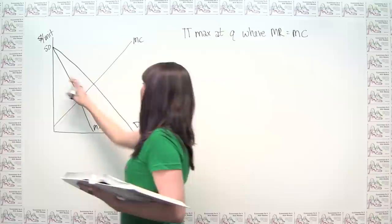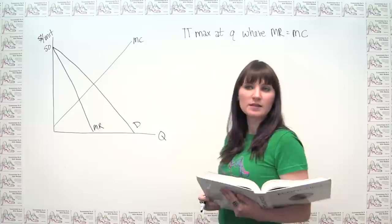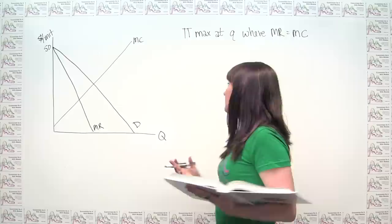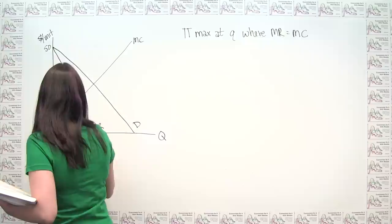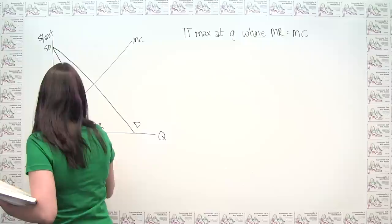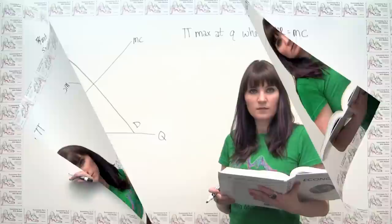In general, the marginal revenue curve starts at the same point on the vertical axis as the demand curve but is twice as steep. So if the monopolist is maximizing profit by deciding how much to produce, we just find where marginal revenue equals marginal cost. The profit maximizing quantity for our monopolist — Q star sub m for monopoly — is the quantity at which these curves intersect, which is 3.